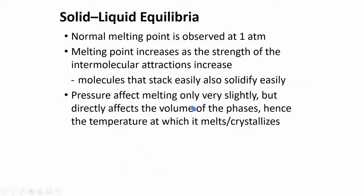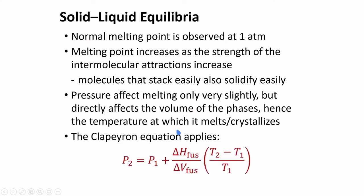Pressure affect melting point only very slightly, but directly affects the volume of the phases. Hence, the temperature at which it melts or crystallizes. We can use here the Clapeyron equation. In this equation, delta V of fusion is equal to the volume of the liquid minus the volume of the solid.